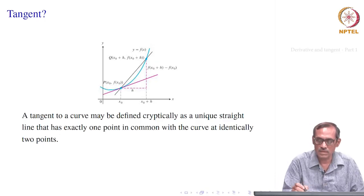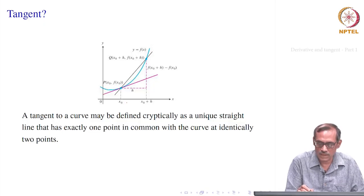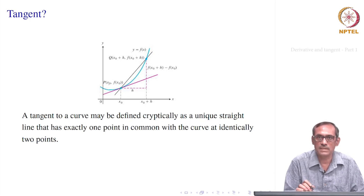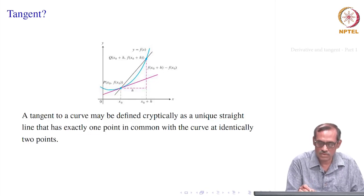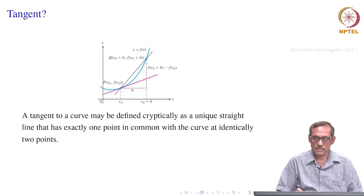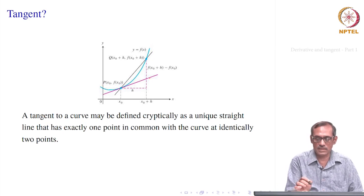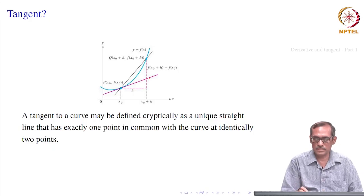Consider a curve shown in blue. We take a point x₀ on the x-axis, corresponding to a point P on the curve with coordinates (x₀, f(x₀)). At that point, the pink straight line is the tangent to the curve. Intuitively, it is a unique straight line which touches the curve at that point.